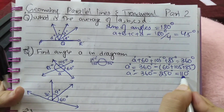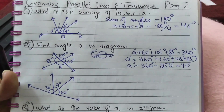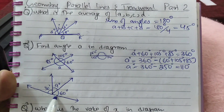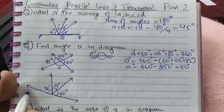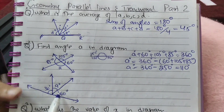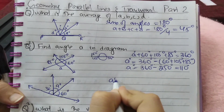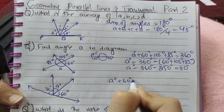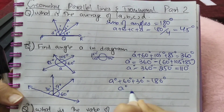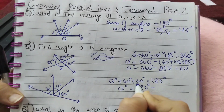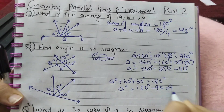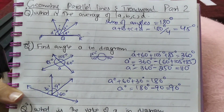So angle A is 110 degrees. Here is another question: find angle A in this diagram. As we discussed, the sum of all angles in a straight line is 180 degrees. So A plus 60 plus 30 equals 180 degrees. The value of A will be 180 degrees minus 90, which is 90 degrees. So angle A is 90 degrees.